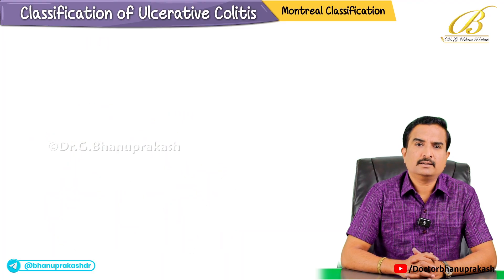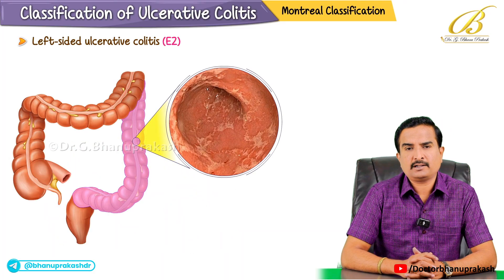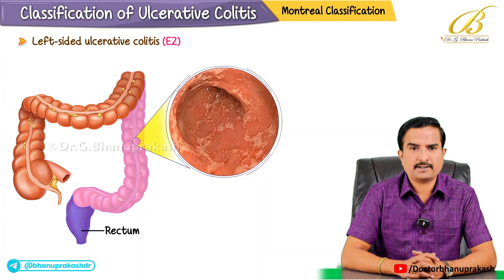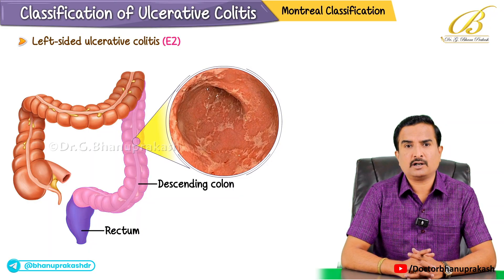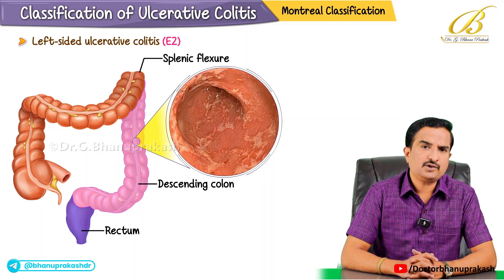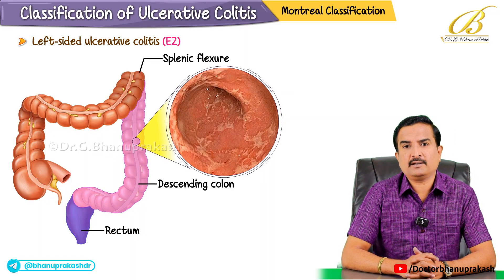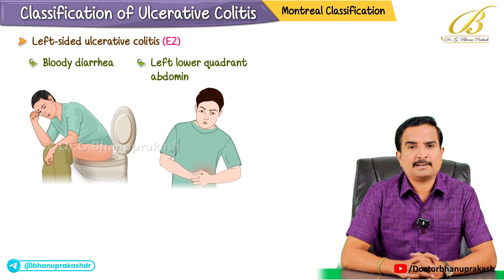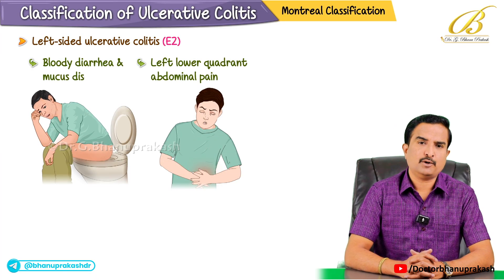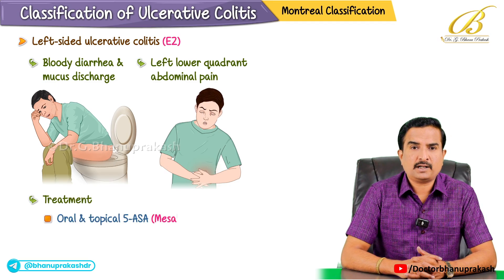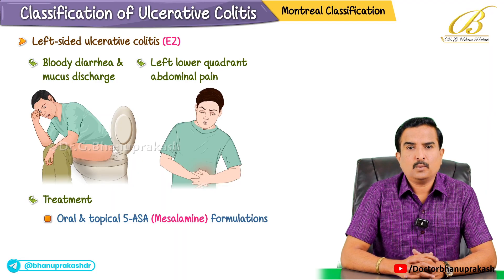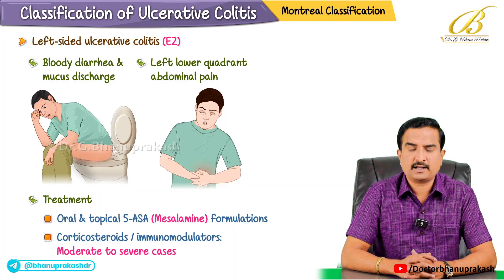The second category is left-sided ulcerative colitis, called E2. In this form, the disease extends from the rectum proximally but remains limited to the descending colon and does not surpass the splenic flexure. Individuals often experience bloody diarrhea, left lower quadrant abdominal pain, and mucus discharge. Therapeutic approaches may include oral and topical formulations like mesalamine, with escalation to corticosteroids or immunomodulators for moderate to severe cases.